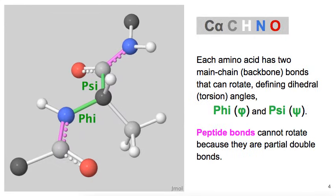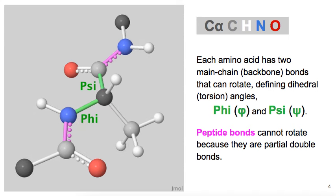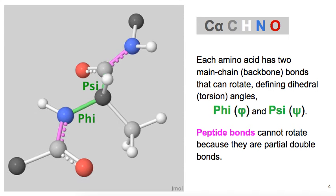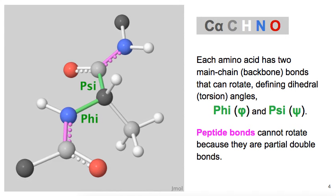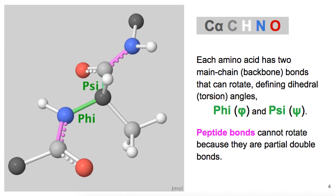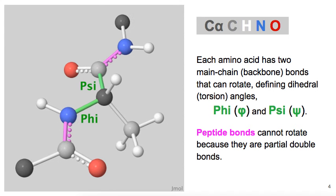In a polypeptide chain, each amino acid has two bonds that can rotate. Those bonds are part of the backbone or main chain. Each of those bonds defines a dihedral or torsion angle, something I'll explain next. Those two bonds are called phi and psi.